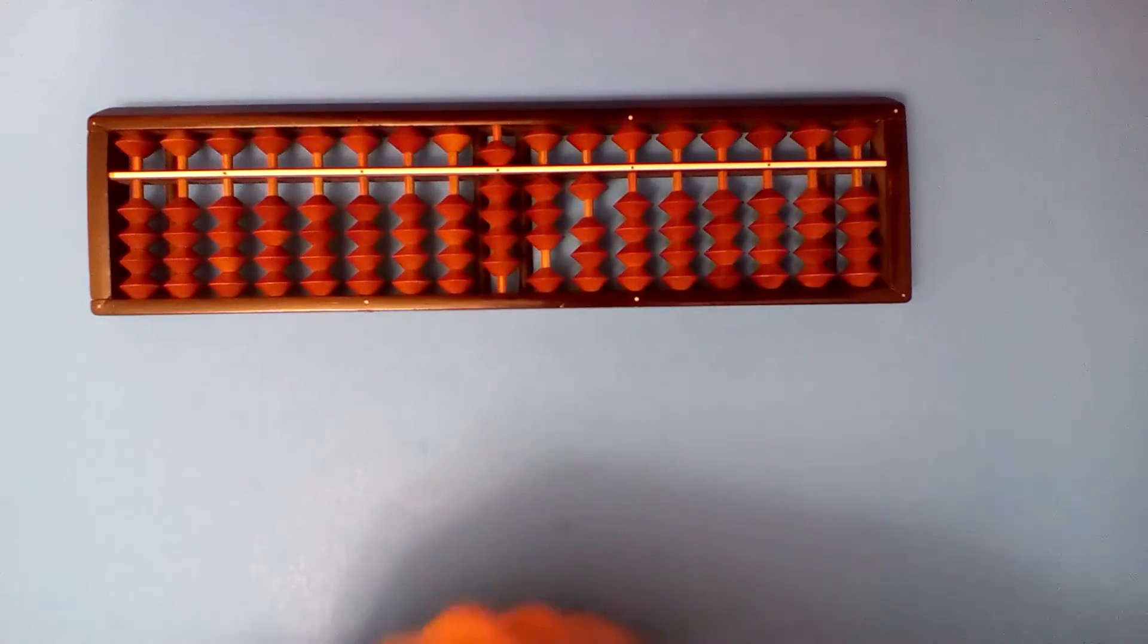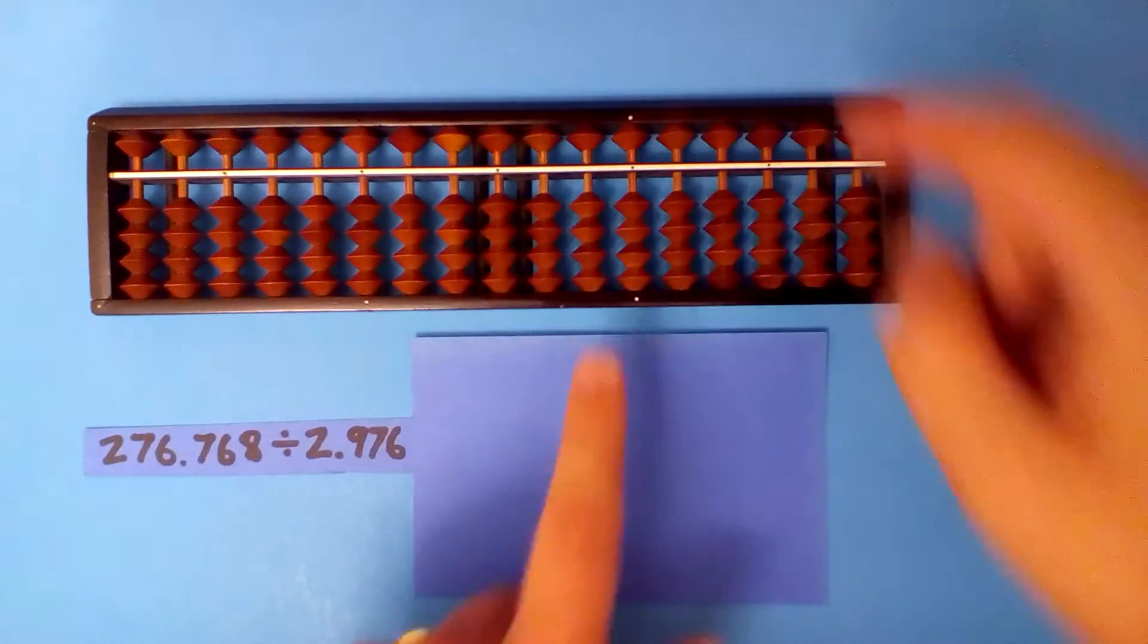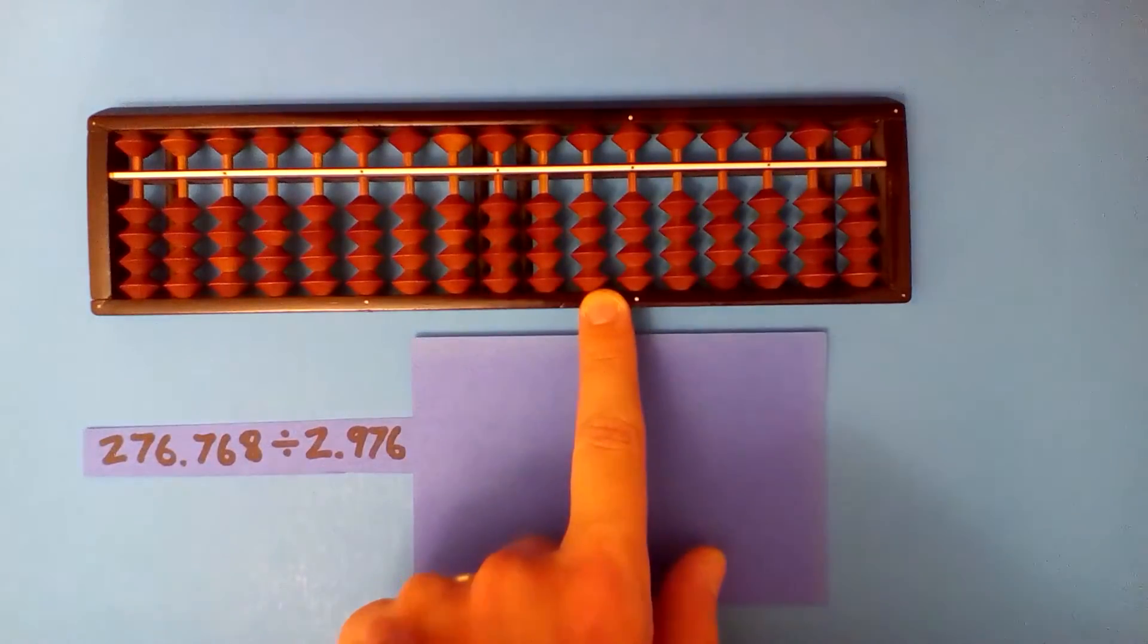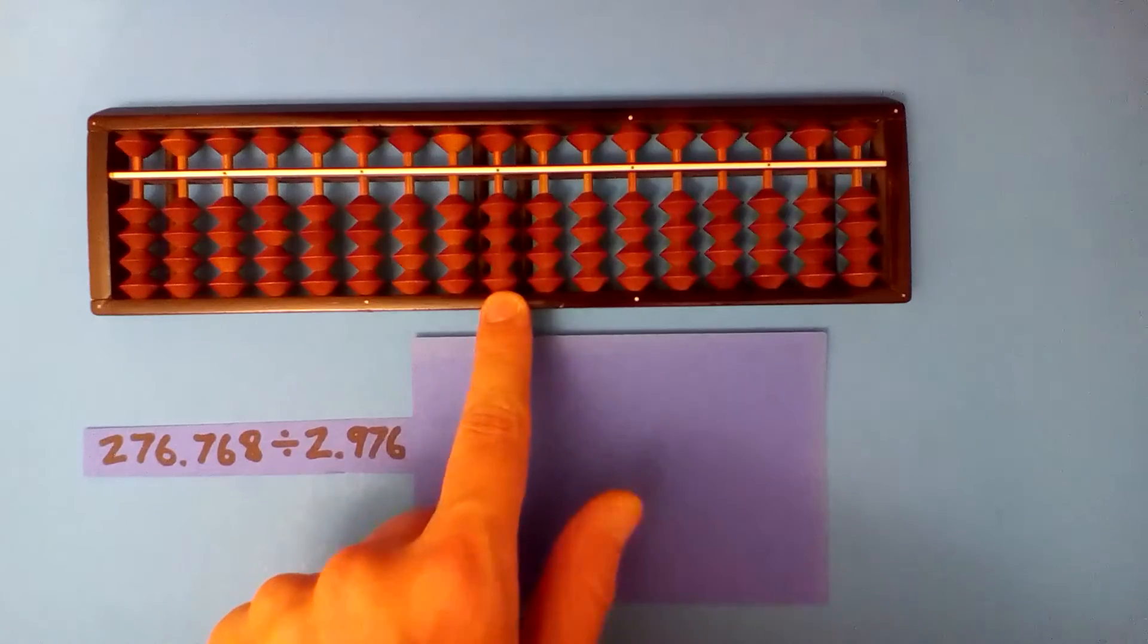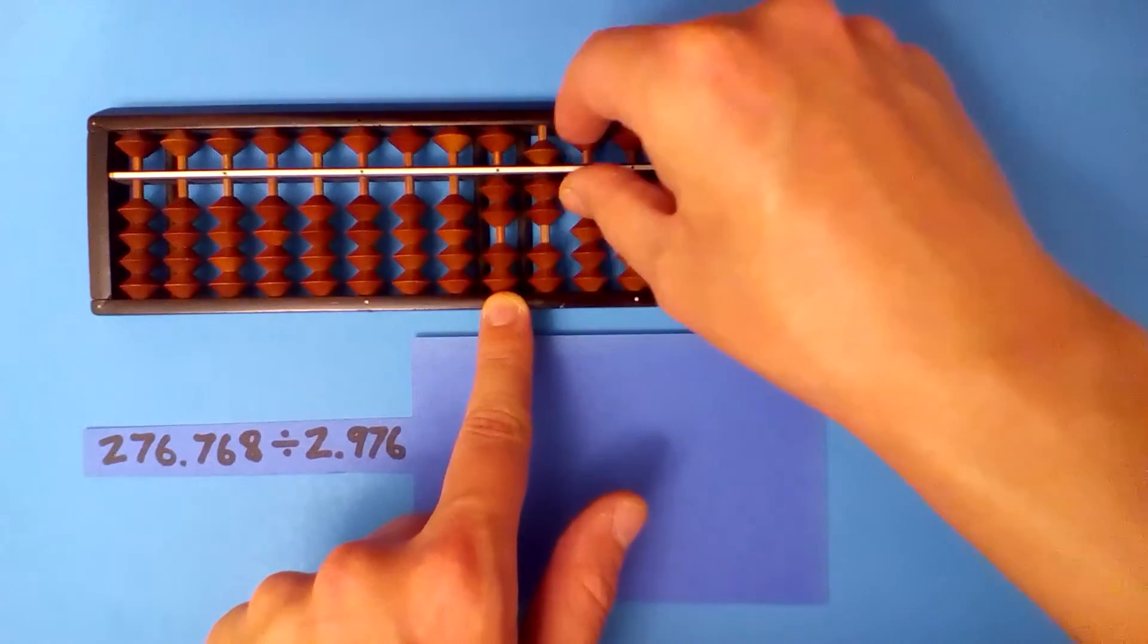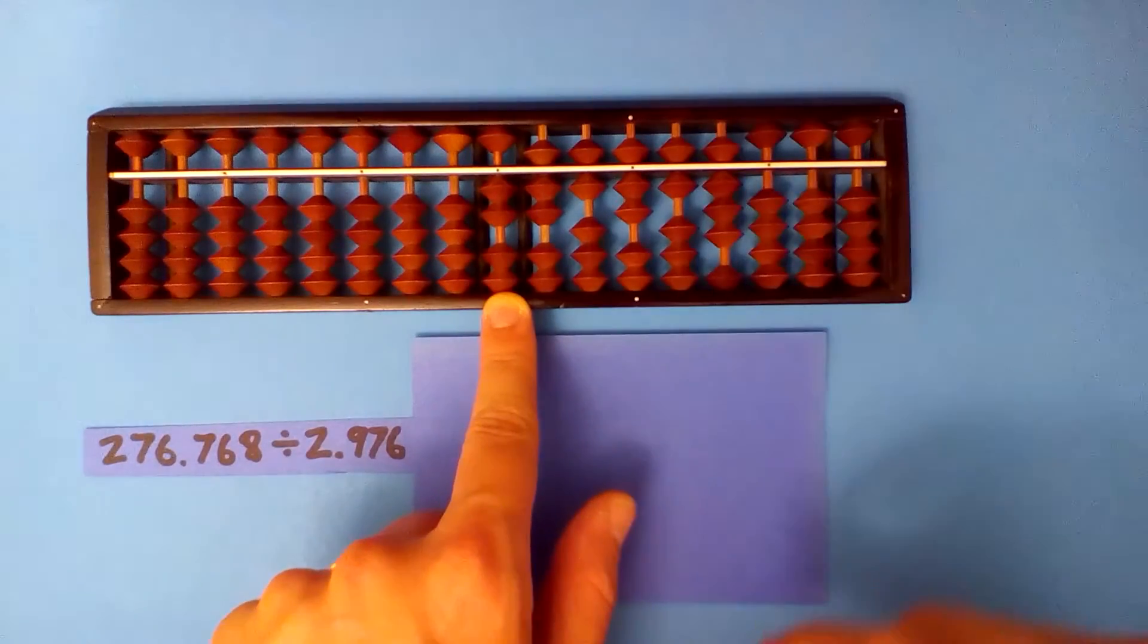Next, we start on the hundredths, but there are two more digits in the dividend: one, two. We'll set up here 2767.68 and divide.